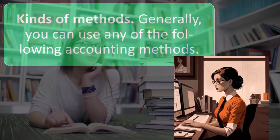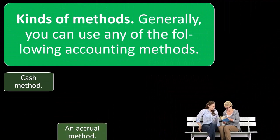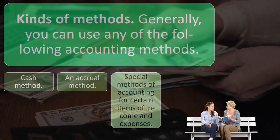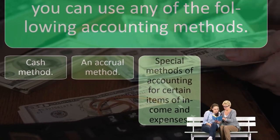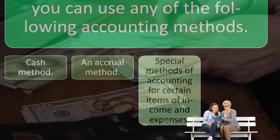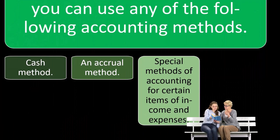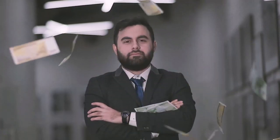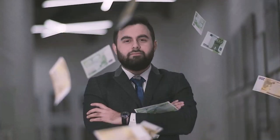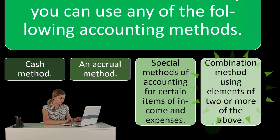Generally, you can use any of the following accounting methods: the cash method, the accrual method, and then special methods of accounting for certain items of income and expenses. There's also a combination or hybrid method — for example, your expenses being paid on a cash-based method and your revenue on an accrual-based method because of the industry you're in. So you can have a combination method using elements of two or more of the methods.